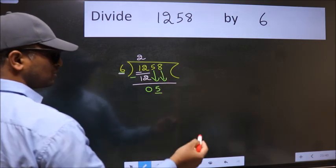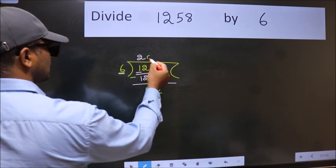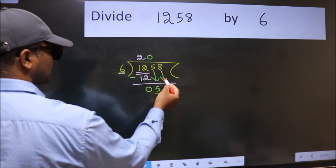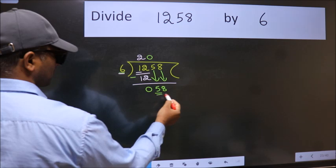And the rule to bring down second number is put 0 here. Then only we can bring this number down. So, 58.